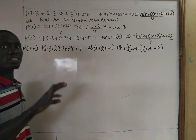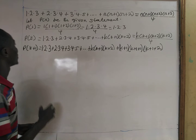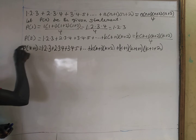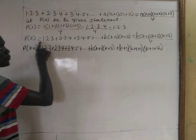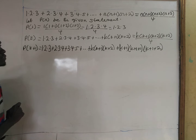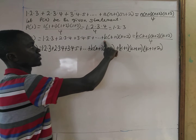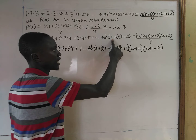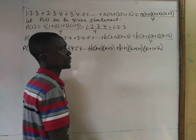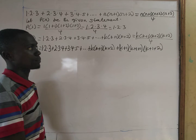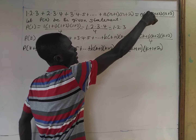Now we assume that P(k) is also true for some positive integer k. So we have 1×2×3 + 2×3×4 + 3×4×5 + ... + k(k+1)(k+2) equals k(k+1)(k+2)(k+3) all divided by 4. So wherever you see n, you put in k.